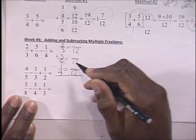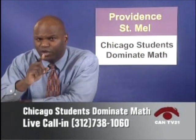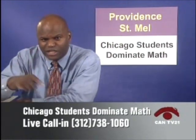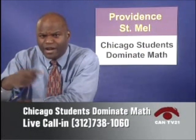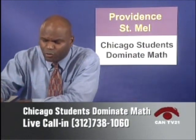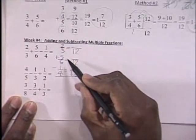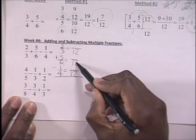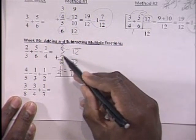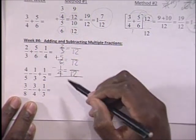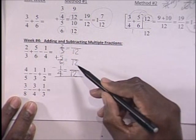I want to emphasize what we did not do to get 12 — we did not just multiply all the denominators together. That is a very common mistake. We found the least common denominator, which was 12. We did not multiply 3 times 6 times 4, which would give you a number much larger than 12.